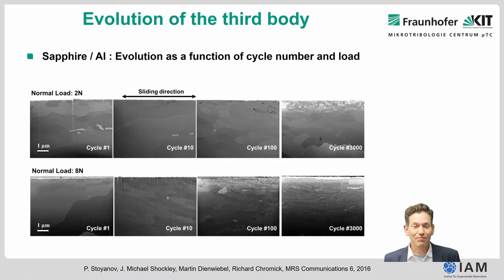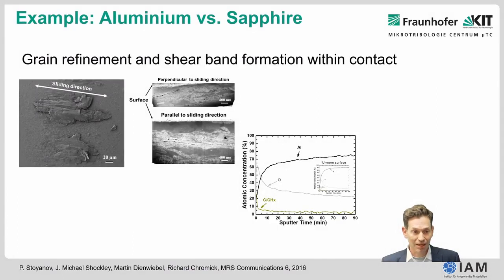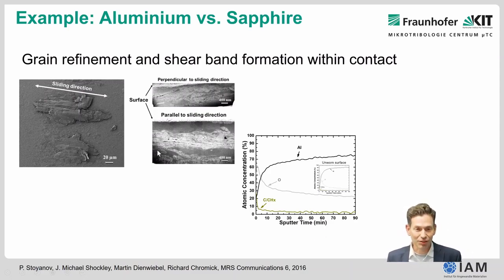The microscopic mechanisms leading to this grain refinement are explained in the presentation of Christian Greiner, which you may have already watched on this channel. In addition to grain refinement on the aluminum surface, we also have transfer formation — transfer patches visible on the sphere, with very strong grain refinement parallel to sliding and formation of shear bands in the contact. This material is also highly oxidized, as confirmed by XPS photoelectron spectroscopy depth profiles.